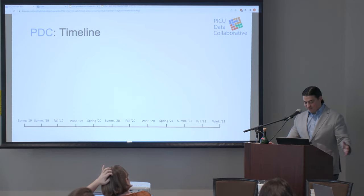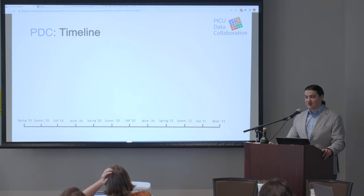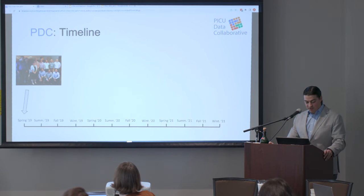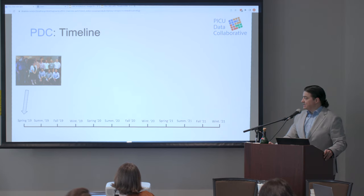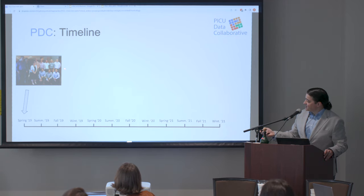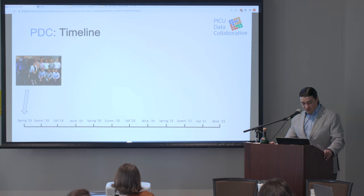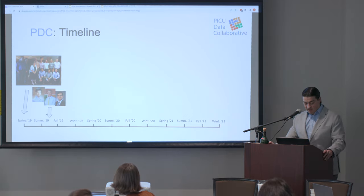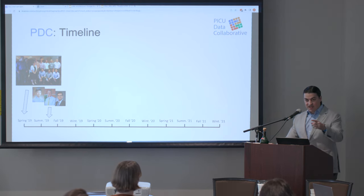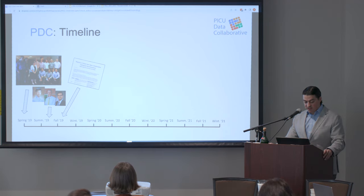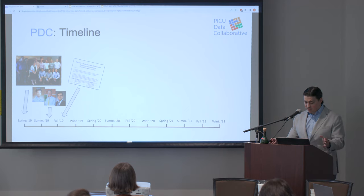A brief timeline — things don't happen overnight. I probably should have started in 1997 when Randall first thought about a data collaborative. But fast forward about 20 years: we had a brief meeting, a discussion — let's get together and talk about this. We had a VPQ-sponsored meeting in LA in the spring of 2019. That photo shows Chris Horvath, Reed Ferris, Tell Bennett, Tim Cornell, Kurt Kennedy, Alicia, myself, and others. We met and put together a plan for how we were going to do this collaborative.